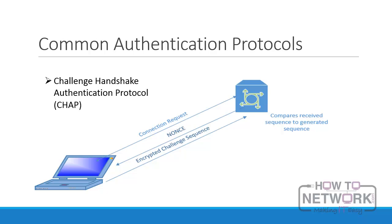Common Authentication Protocols: Challenge Handshake Authentication Protocol, CHAP, is an encrypted authentication protocol that was developed to avoid sending passwords in plain text. CHAP uses MD5 hashing and a challenge-and-response to perform authentication without exposing the user's credentials. In the CHAP process, the client requests a connection to the remote access server. The remote access server responds with a challenge sequence known as a nonce. The client uses its password as an encryption key to encrypt the challenge sequence and sends the modified sequence back to the server. The remote server encrypts the original challenge sequence with the user's password as stored in its database and compares the received sequence with the sequence that it just generated. If the two sequences match, the passwords are therefore the same and the user is allowed to connect.